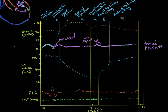At this point the mitral valve closes. Then we enter isovolumetric contraction, where the left ventricle starts to contract, causing a huge increase in pressure in that chamber — up to this point here — where the pressure has built up enough to push blood across the aortic valve into the aorta. We keep building pressure in the left ventricle because we're still in the middle of contraction.